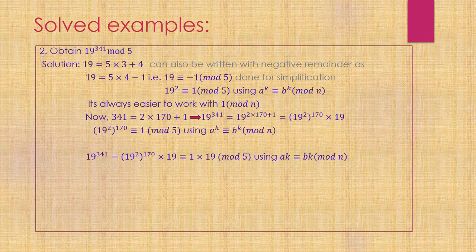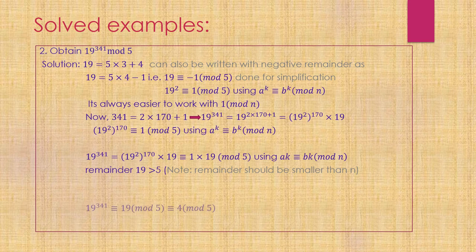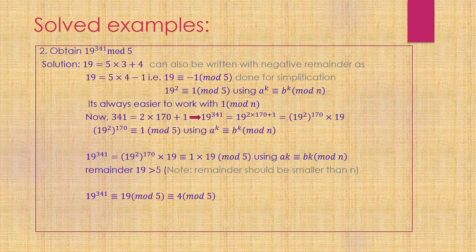Multiplying both sides by 19, I get 19^341 is congruent to 19 modulo 5. Since 19 is greater than 5, we reduce: 19 modulo 5 equals 4. So 19^341 is congruent to 4 modulo 5, and thus the remainder is 4.